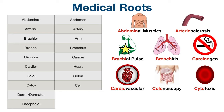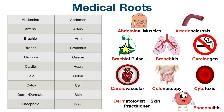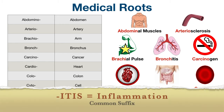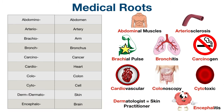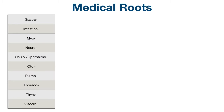Next, we have derm or dermato, which refers to skin. A dermatologist is a medical practitioner who specializes in treating and diagnosing skin conditions. Finally, we have encephalo, which refers to the brain. A medical term is encephalitis. We'll learn that -itis means inflammation when we talk about suffixes in the next video, so encephalitis is inflammation of the brain.